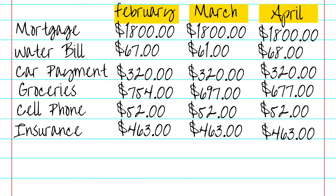Once you have them categorized, you're going to total up each category. Most likely things like rent or mortgage will be quick, but for things like dining out or gas for your car, total those up so you have the total amount spent in each category for each month.